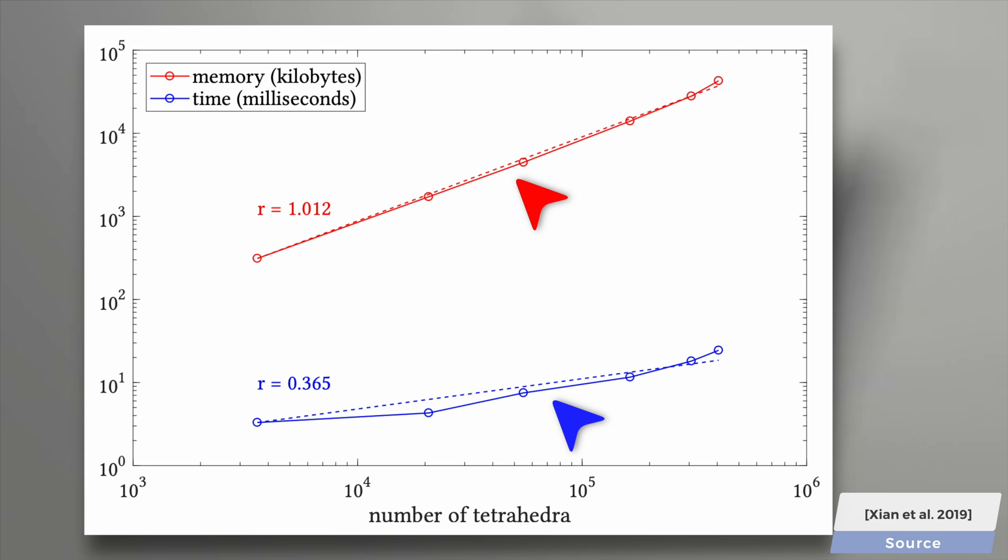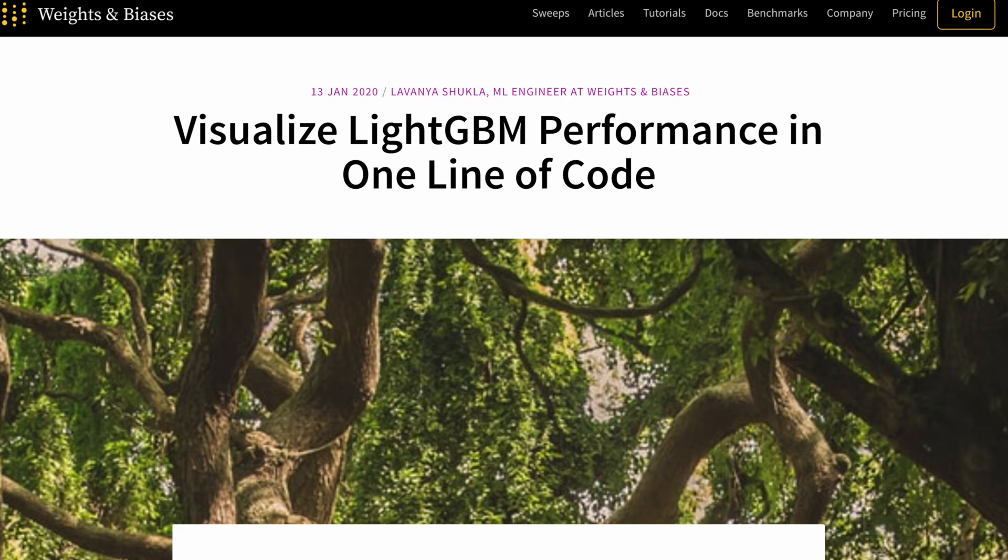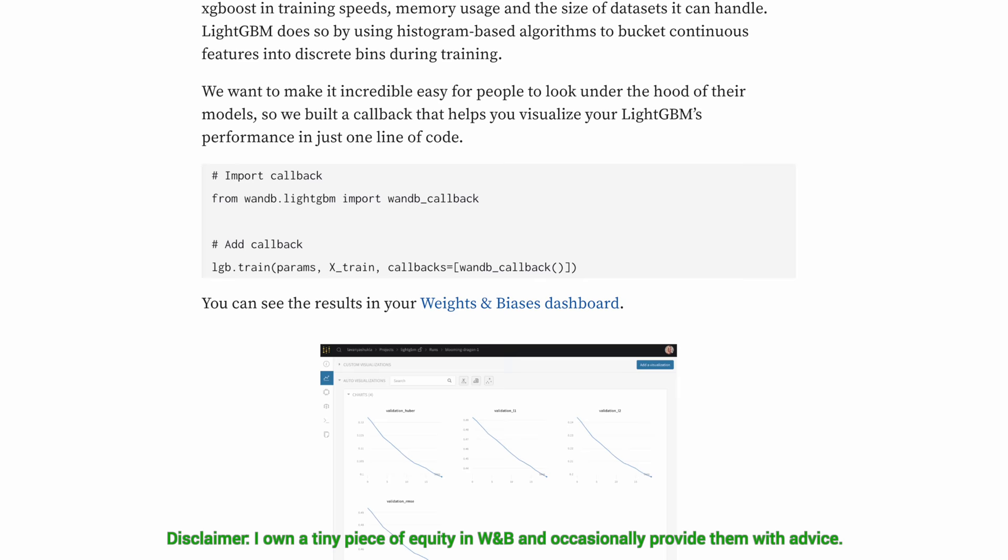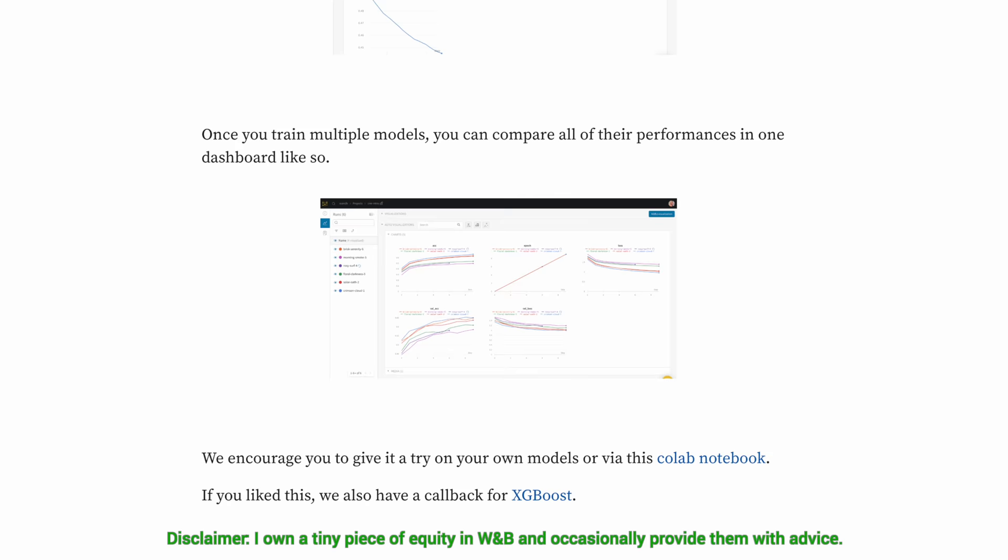This episode has been supported by Weights and Biases. Here, they show you how to make it to the top of Kaggle leaderboards by using their tool to find the best model faster than everyone else. Also, Weights and Biases provides tools to track your experiments in your deep learning projects.